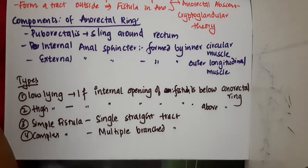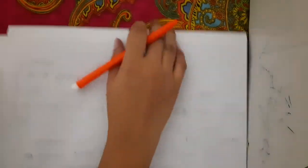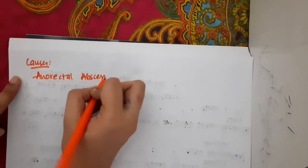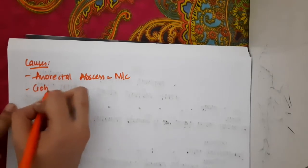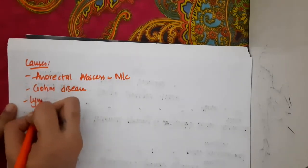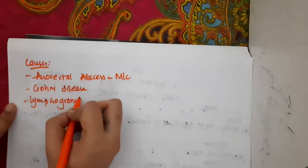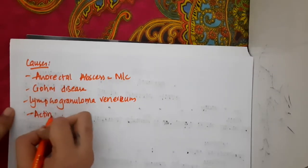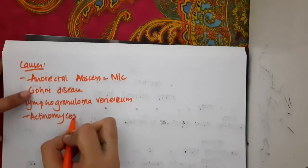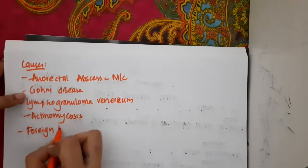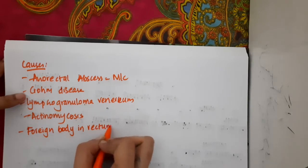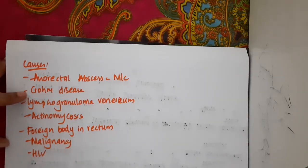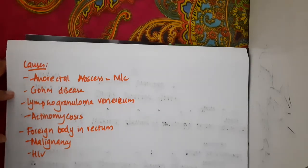The causes of anorectal fistula are: anorectal abscess, which is the most common cause; Crohn's disease; lymphogranuloma venereum, which is an STD; actinomycosis; foreign body in the rectum; and malignancy and HIV.